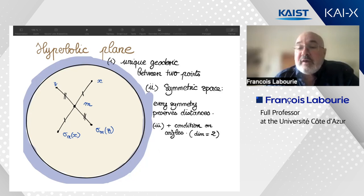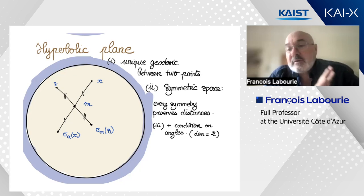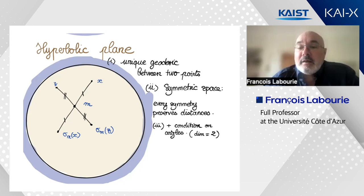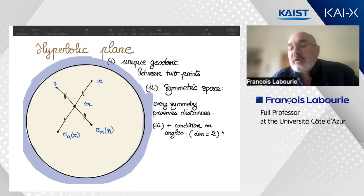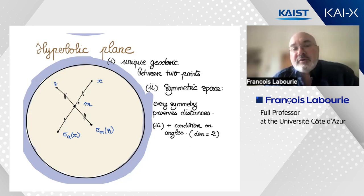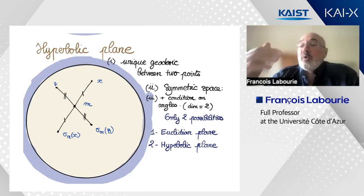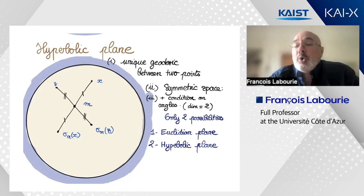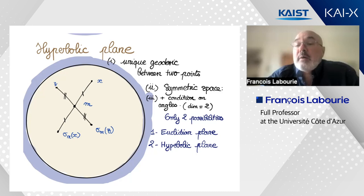When you impose all these conditions, it turns out there are only two possibilities in dimension two: the Euclidean plane, and the hyperbolic plane. How do you distinguish these two symmetric spaces? You build a model of the hyperbolic plane — and when you do so by whatever model you prefer, you get an extra property.